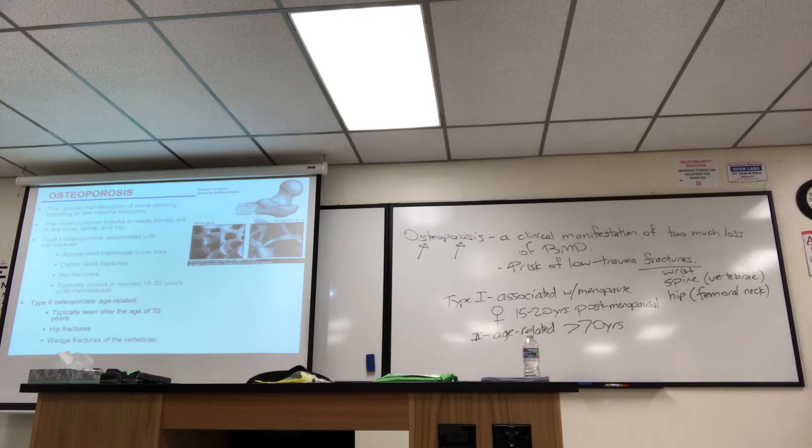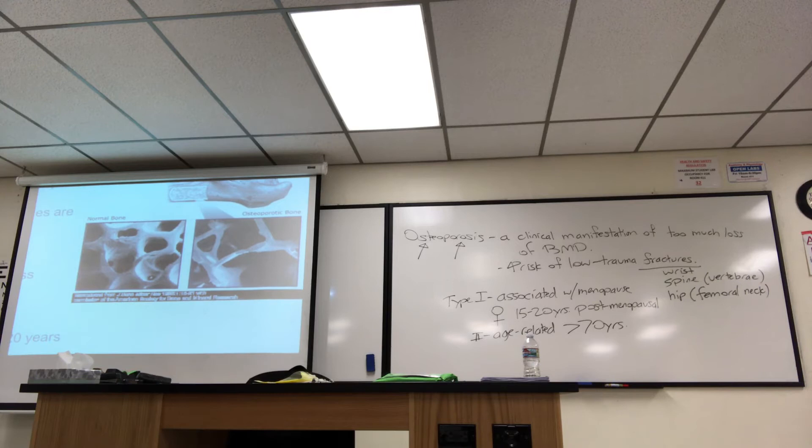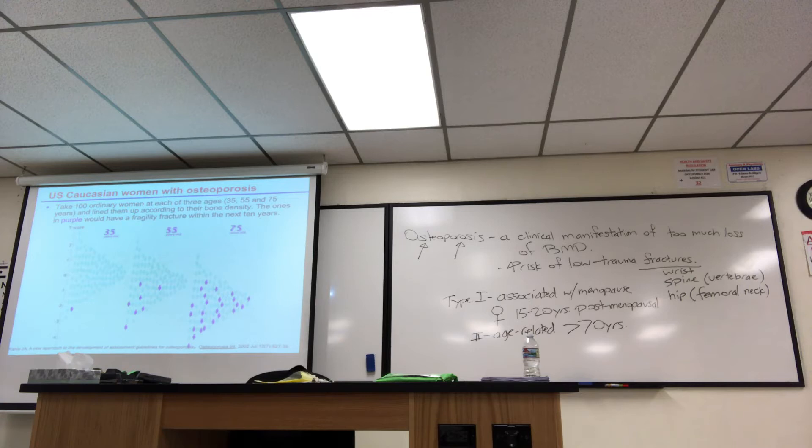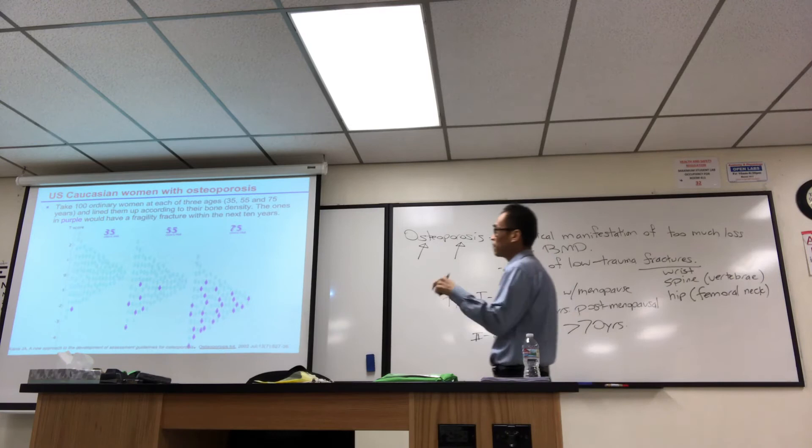Maybe a lifestyle of being physically inactive. I give a little picture there, because I say accelerated trabecular bone loss. It's not hard to tell which is the osteoporotic bone. There's just less of those little trabecular struts. So here's some data. U.S. Caucasian women, just to give you an idea of what studies show. You take 100 ordinary women in 3 age cohorts, 35, 55, 75. You just line them up, and you've got the statistics here. The ones in purple would have a fragility fracture within the next 10 years.